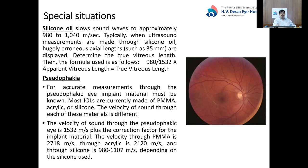In special situations such as silicone oil in the eye following retinal surgery, the same eye may develop a cataract. Silicone oil slows sound waves to approximately 980 to 1040 meters per second. Without the correct setting, you may get an apparent axial length as large as 35 millimeters. The correction is: multiply the apparent vitreous length by the ratio of speed in silicone oil divided by speed in aqueous to get the true vitreous length. Some machines have a silicone oil setting. Add this corrected length to the other parameters to get the total axial length.